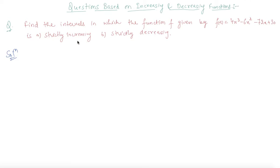Students, here is a question which states that find the intervals in which the function given by f(x) is strictly increasing or strictly decreasing. The f(x) given to us is 4x³ - 6x² - 72x + 30.